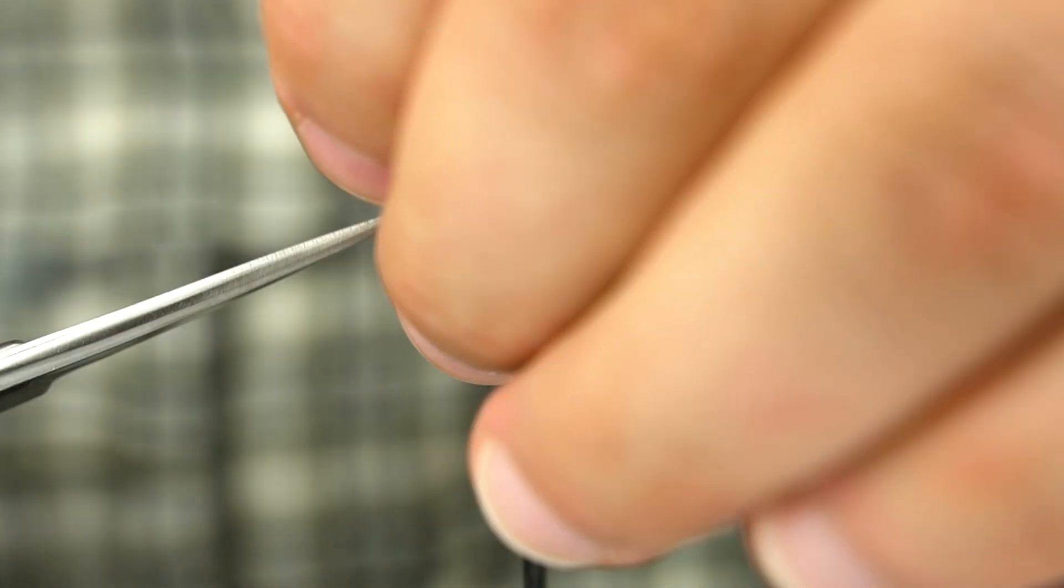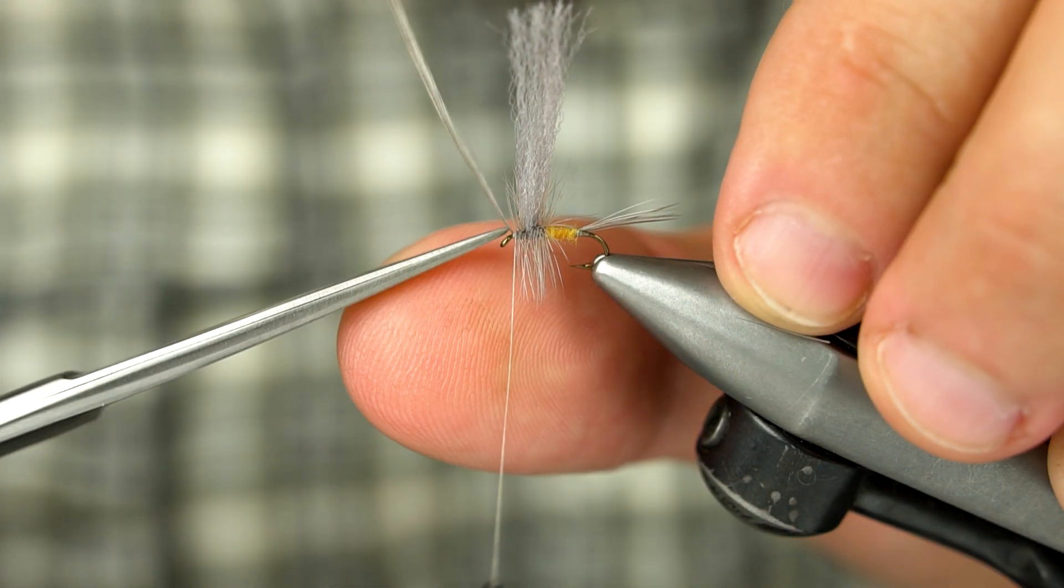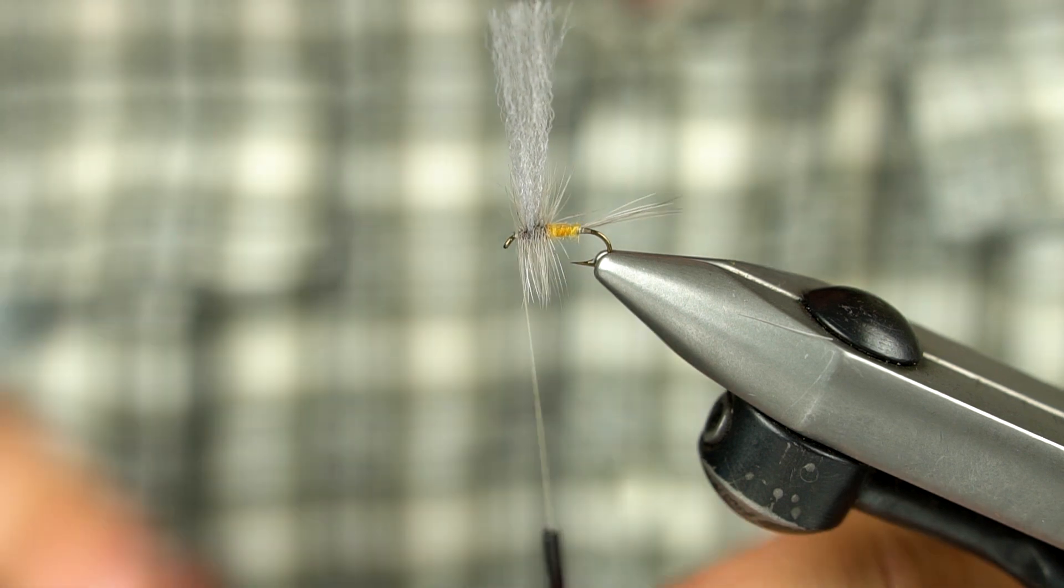Tie down the tip of your hackle feather, clip the scraps, and secure it with a whip finish.